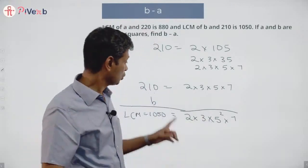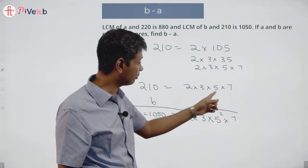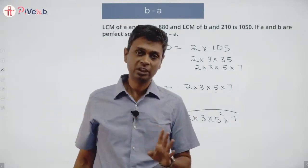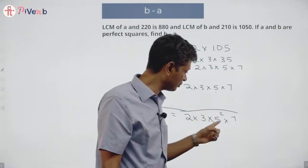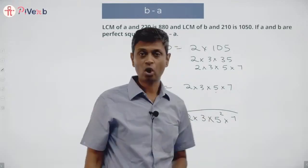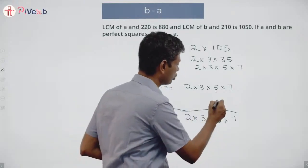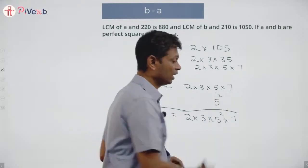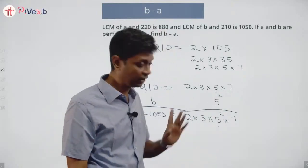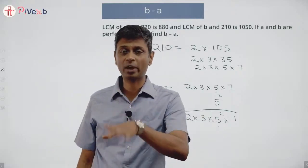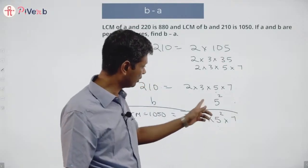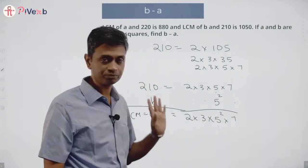The LCM has 5² in it. Since 210 has only one factor of 5, the second 5 must come from b — so b definitely has to have 5². It cannot be 5³ (that would make the LCM have 5³), and it cannot be just 5¹. Apart from 5², b may or may not have factors of 2, 3, or 7.